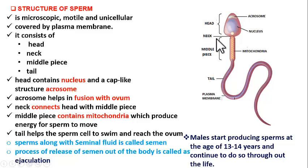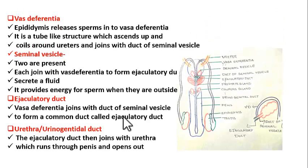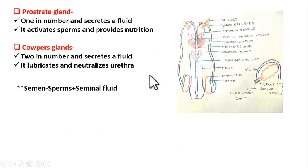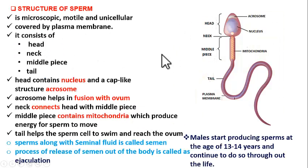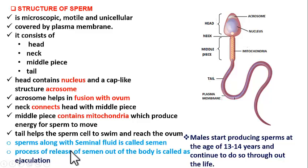This is about the structure and the role of each part. Now, sperms along with seminal fluid is called semen. What is semen? Semen means sperms along with the fluid — the seminal fluid. This fluid contains the secretions from three glands: seminal vesicles, prostate glands, and cowper's glands. So semen means sperms plus the fluid of those three glands. And the process of release of semen out of the body is called ejaculation. During the mating process, the semen is released from the body of the male and reaches the female reproductive system, and that process of release is called ejaculation.